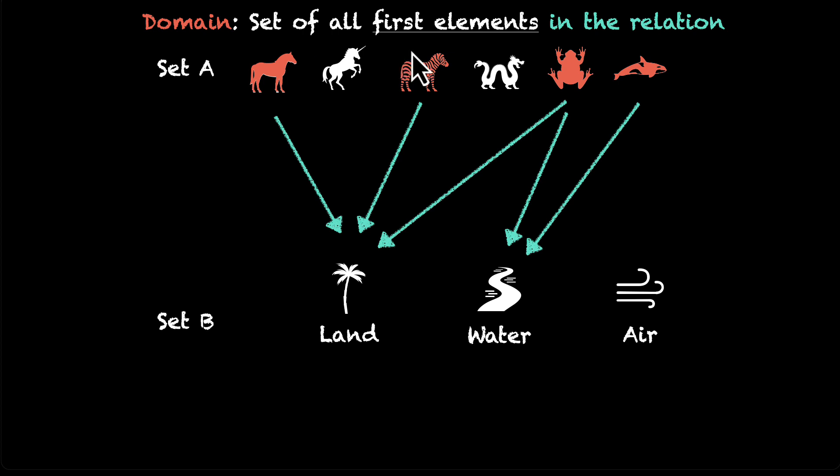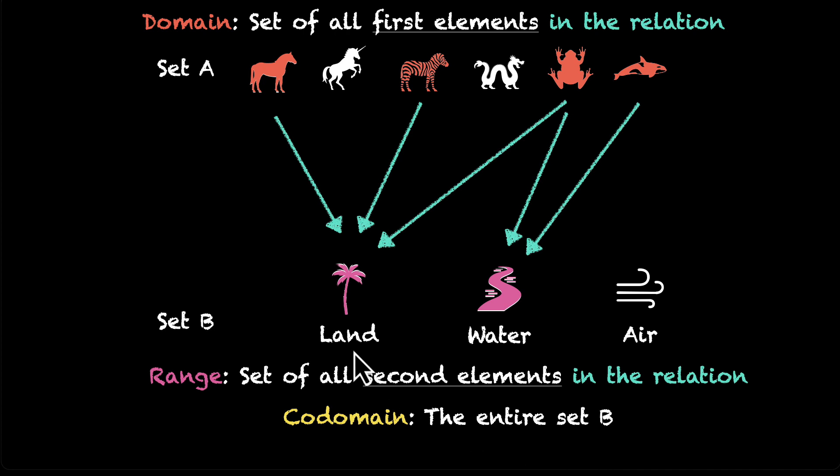And the elements from set B that are part of the relation, the land and water, they form the range. That's the set of all second elements in the relation. And if we take the entire set B, that's called the co-domain. So co-domain is the entire set B. That's going to be land, water, and air.